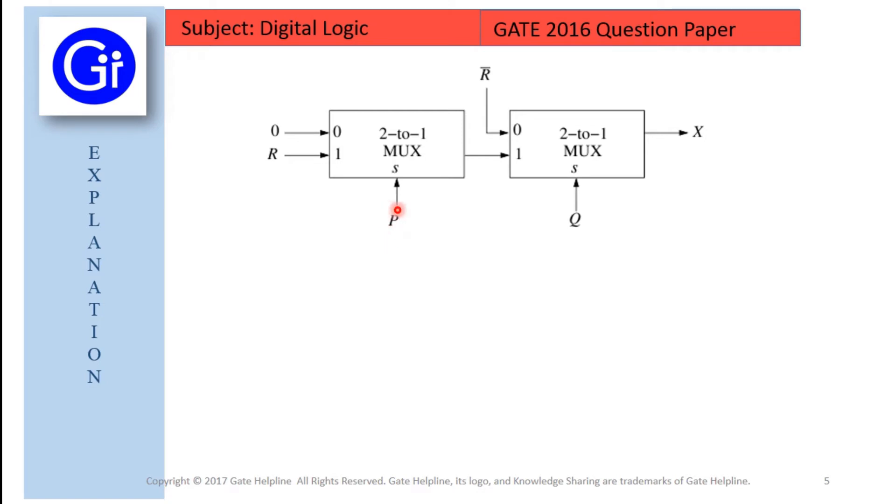And here the select line is P, that is P can be 0 and 1. So if P is 0, it will select this 0 as input. And if P is 1, then the input will be R.